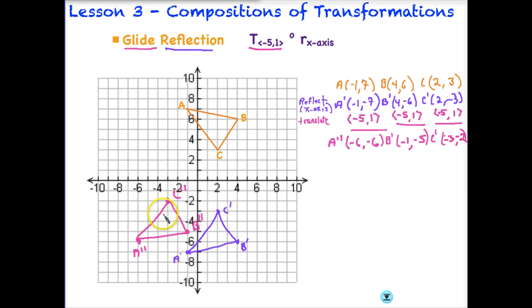Now we have our final image, which has been transformed twice — first reflected over the x-axis, and then it slid via a translation of (-5, 1).